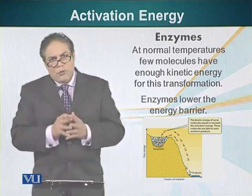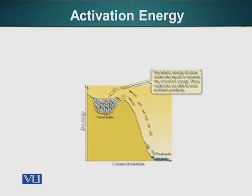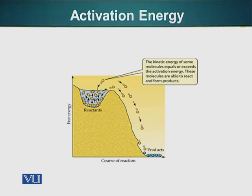So the process is very, very slow — as we looked at in the example of degradation of polyarginine. Enzymes can help the reactants attain the transition state with a lower energy requirement.